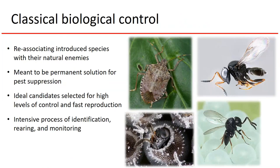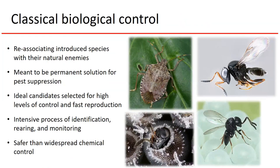Right now they're still introducing Trissolcus japonicus to new populations and have a major program in place to monitor its effectiveness. This is a very intensive process: going back to the native range, identifying which species cause the highest mortality, bringing them back, raising them in the lab to numbers high enough for release, and monitoring to confirm the program is working. It costs a lot of taxpayer money and effort. But the rationale is that this is safer than widespread chemical control and will eventually provide a long-term, area-wide pest management solution.